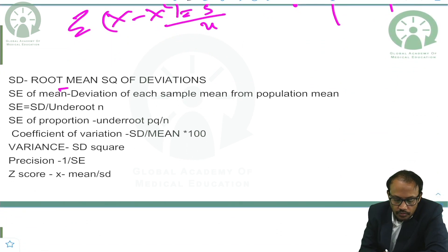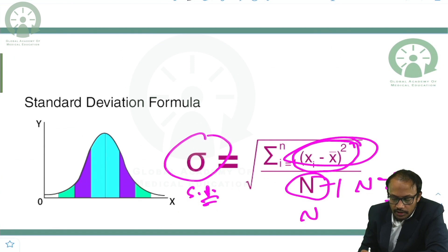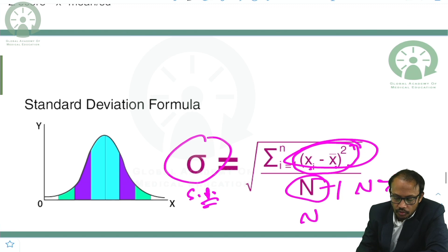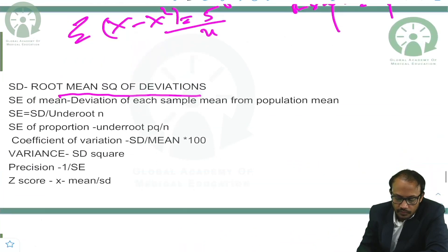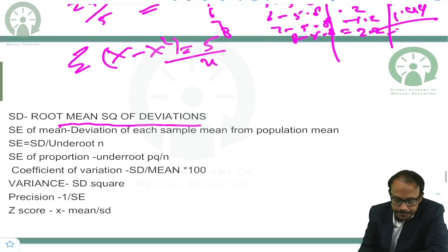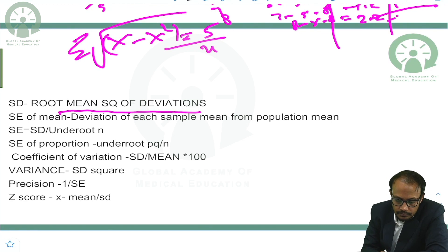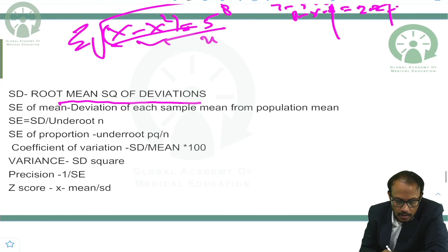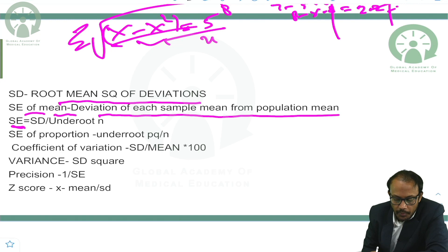Standard deviation is the root mean square of all deviations. We look at how much each individual value deviates from the mean, and then take the root mean square of all those values. Standard error refers to the deviation of each sample mean from the population mean.